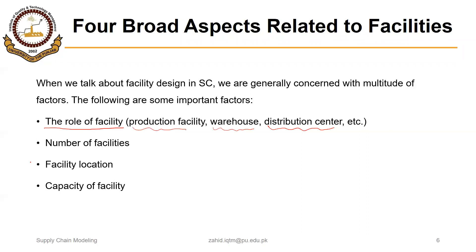We discussed the aspect of facility design — that is, where the facility should be located — using different methods like center of gravity, Weber method, factor rating method, and AHP. We learned to decide the location of a facility or to select a facility among available options. In today's topic, we are going to specifically address two points: the number of facilities and capacity of facility. With respect to capacity, we are not here going to decide what the capacity of a facility should be, but we will learn to allocate capacity from a certain plant to a certain demand point or market.